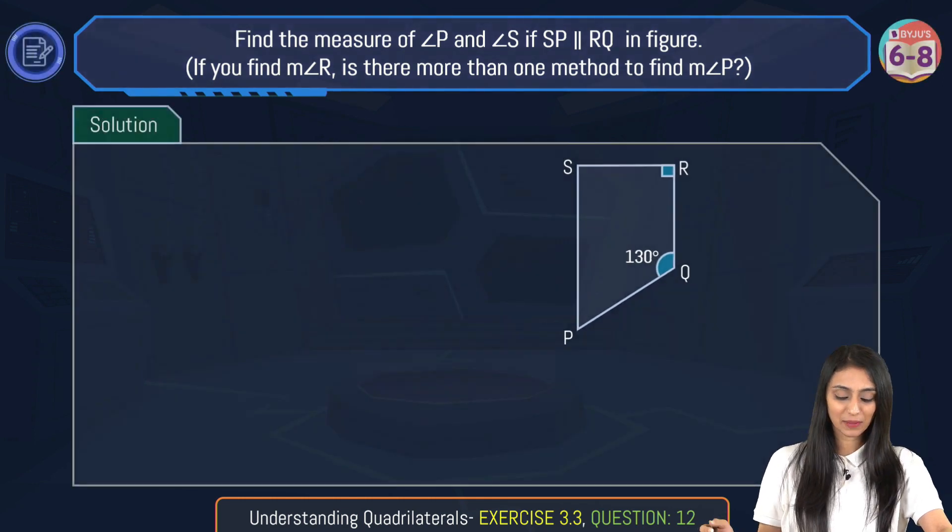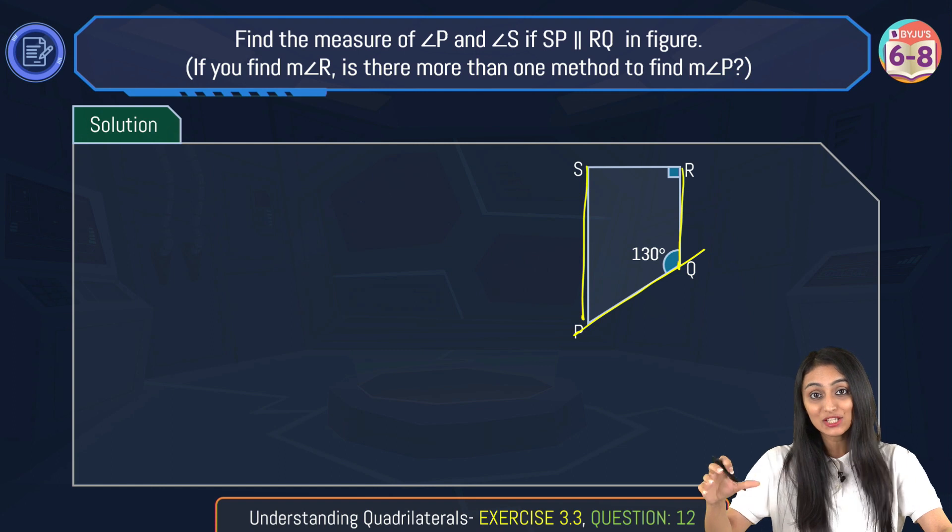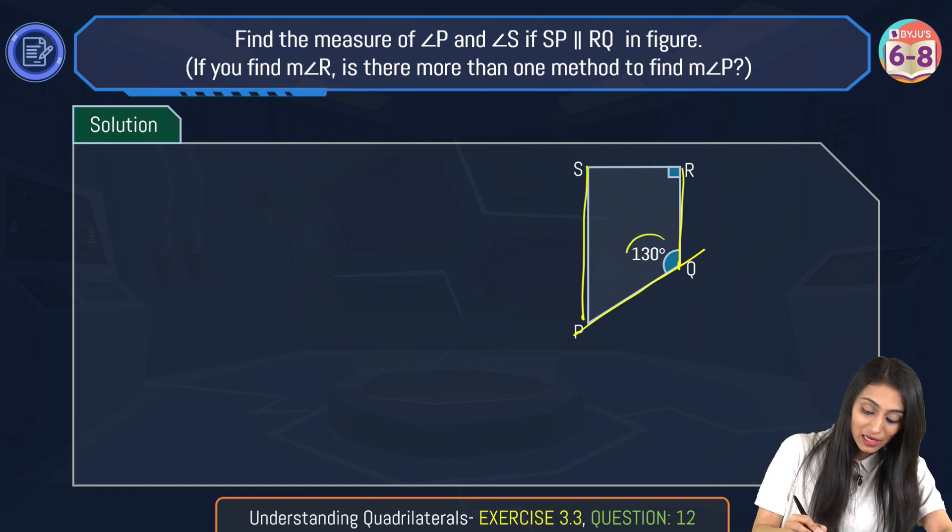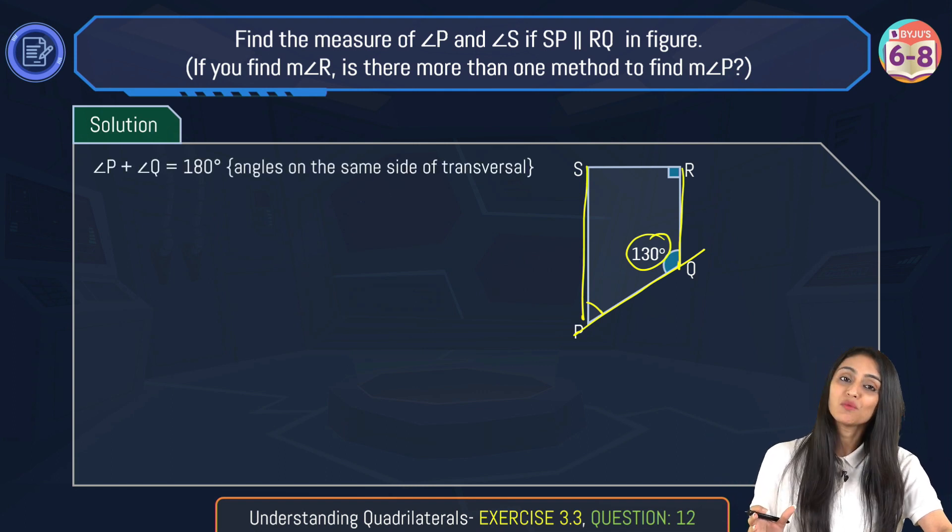Now this is very simple. If SP and RQ are parallel, we know one thing: this over here is a transversal which is intersecting these two parallel lines. So this angle Q and this angle P are basically on the same side of the transversal, right? So their sum would be 180 degrees.